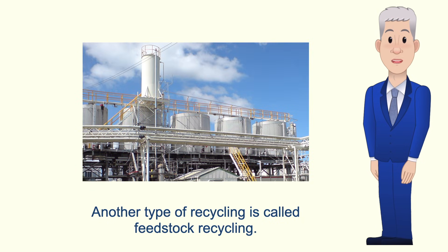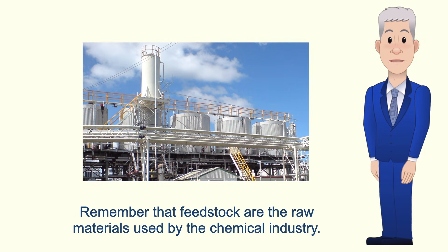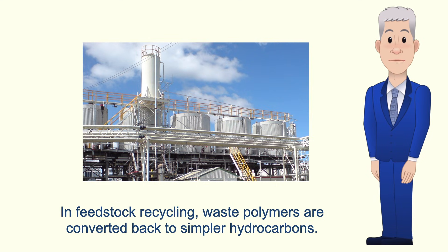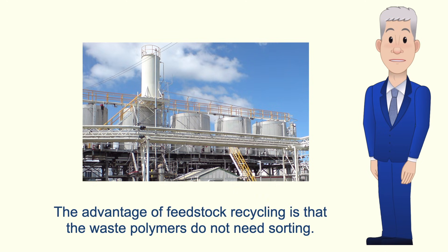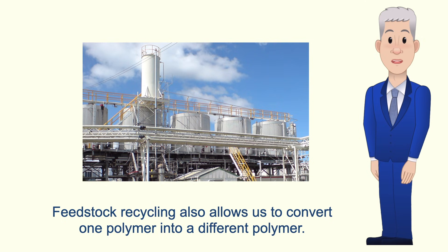Another type of recycling is called feedstock recycling. Remember that feedstocks are the raw materials used by the chemical industry. In feedstock recycling, waste polymers are converted back to simpler hydrocarbons, which can then be cracked and converted to different polymers. The advantage of feedstock recycling is that the waste polymers do not need sorting, and it also allows us to convert one polymer into a different polymer.